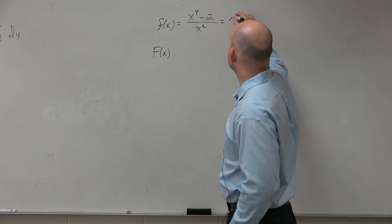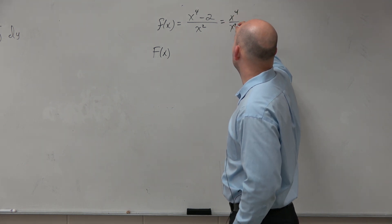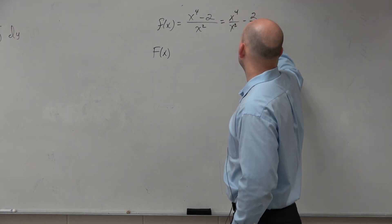So I could rewrite this as x to the fourth over x squared minus 2 over x squared.